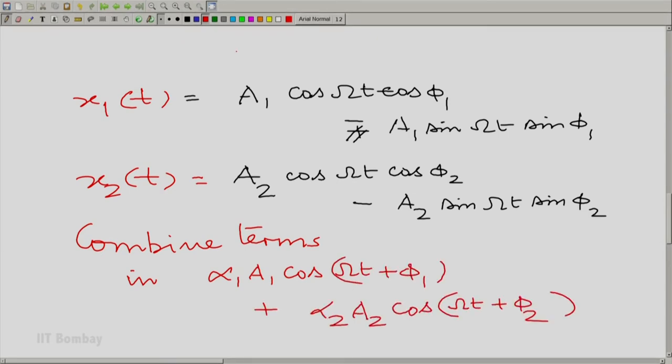How do we combine terms? Essentially, we take the terms with cos(Ωt) and the terms with sin(Ωt) and separate them and aggregate with cos(Ωt) a few terms and with sin(Ωt) a few terms.